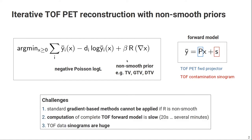That large-scale optimization problem actually brings three big challenges. The first one is if we use non-smooth priors such as total variation or variants of it, we have the problem that the gradient of the prior doesn't exist and we can't use standard gradient-based optimization methods.